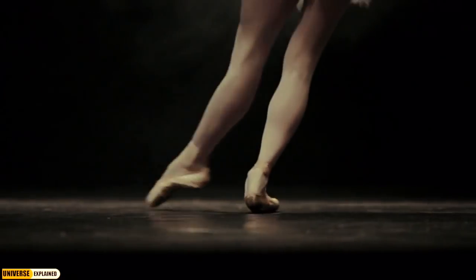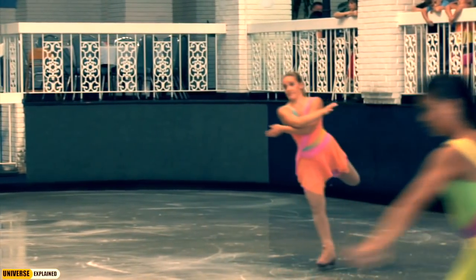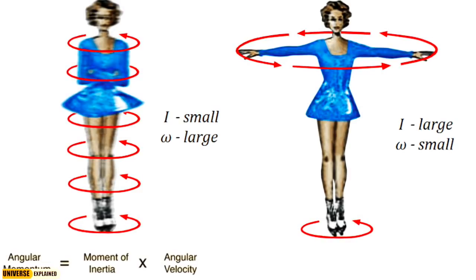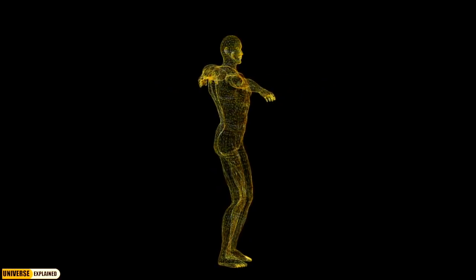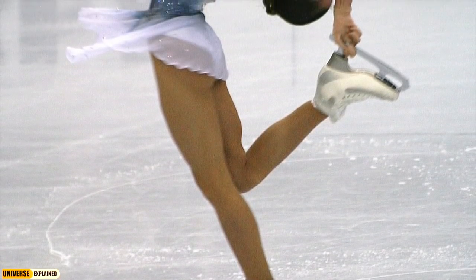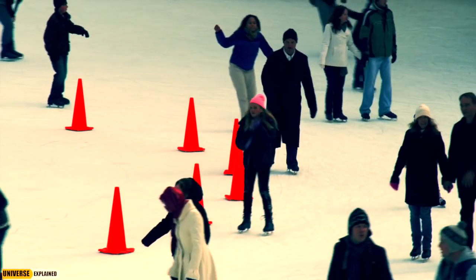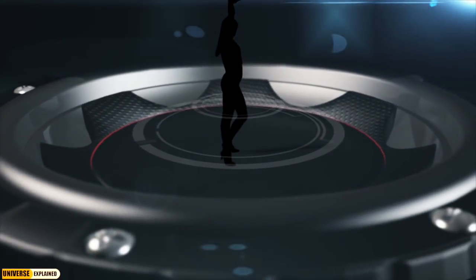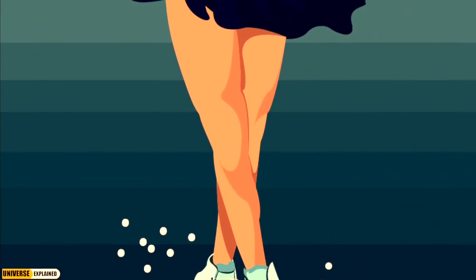This is very similar to how a skater maintains momentum by pulling in their arms toward their body during a spin. Essentially, a figure skater will use their mass to begin a propelled spinning motion. Upon pulling their arms into their body, they increase their spinning velocity by reducing how large their body radius is.